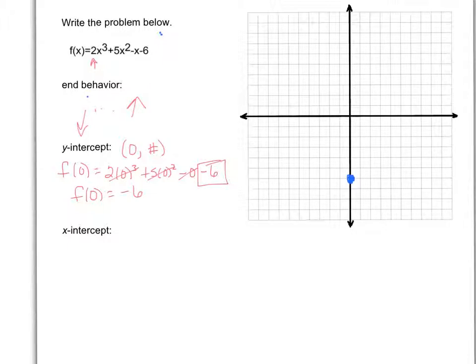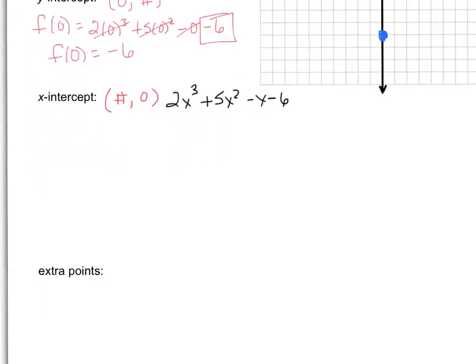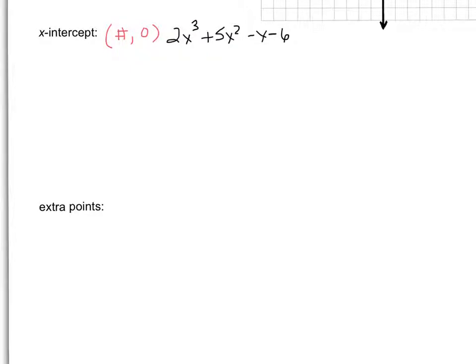If you can factor, which is also another word for a zero - a factor, a zero, and an x-intercept are all synonymous. If you can factor, that's your best day ever. Unfortunately on this problem, we cannot. Which means we get the amazing opportunity to do that p divided by q scenario. Let me zoom in a little bit here, and then we'll work this out.